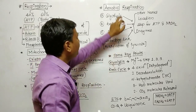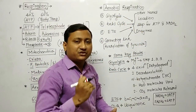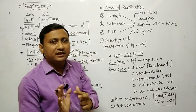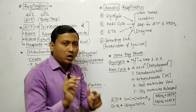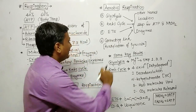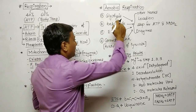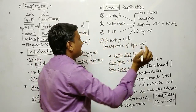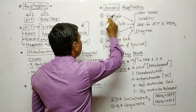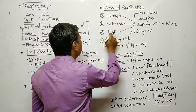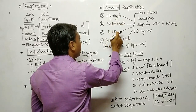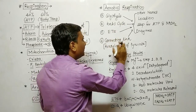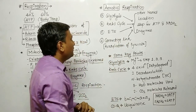The next point is aerobic respiration and its steps. Aerobic respiration means respiration which occurs in the presence of oxygen. Basically there are three steps in the textbook: first is glycolysis, second is the Krebs cycle, and third is electron transport. And in between there is a connecting link. We will briefly discuss each.